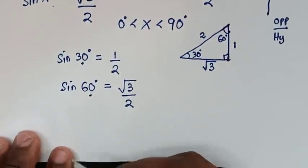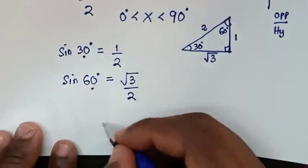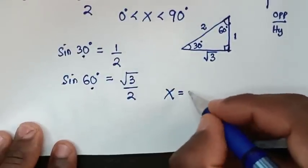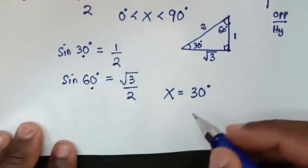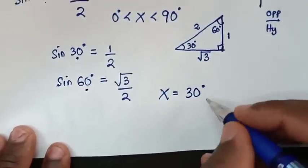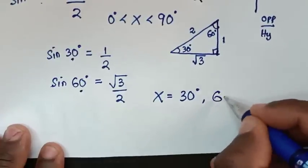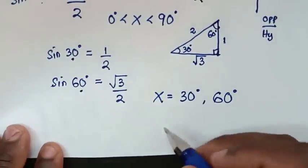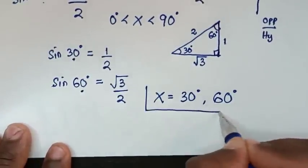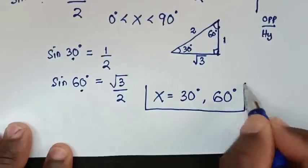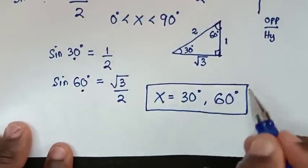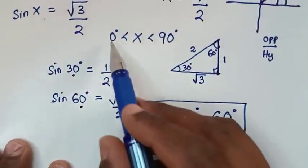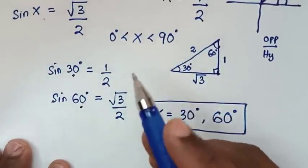Therefore the values of x in this problem are x equals 30 degrees and x equals 60 degrees, and these values satisfy the condition that x is between 0 to 90 degrees.